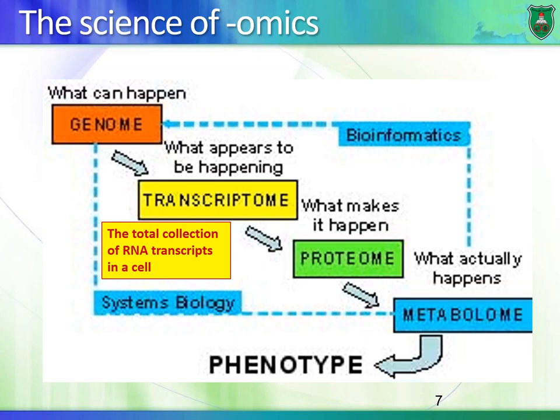Protein biochemists said what's really important is the protein itself — not RNA, because having 10 RNA molecules doesn't necessarily mean you have 10 proteins. Besides, proteins are the ones that carry out the function for cells, not RNA or DNA. So they came up with a new science known as proteomics. Other biochemists said what's really important is the metabolites — the products of enzymatic reactions — and they came up with the science known as metabolomics.